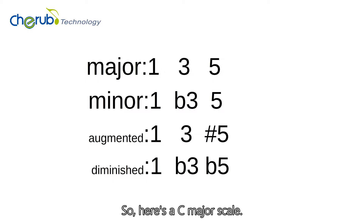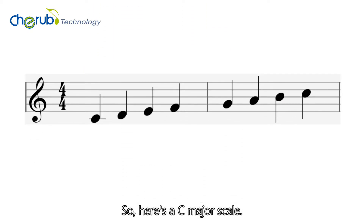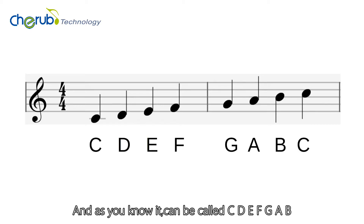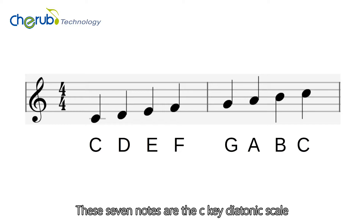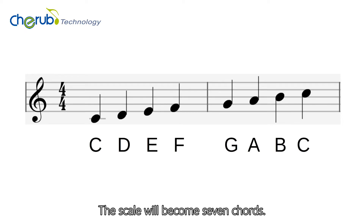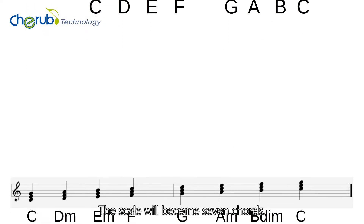Here is the C major scale. As you know, it goes C, D, E, F, G, A, B. These seven notes are the C key diatonic scale, also called the C major scale. Now, using the diatonic triad formula, the scale will produce seven chords.